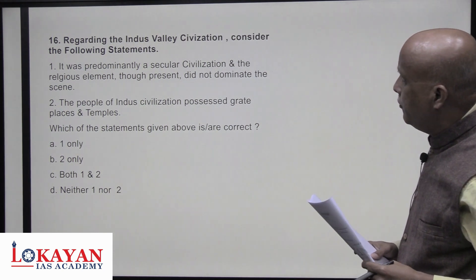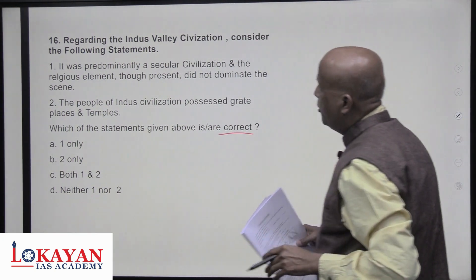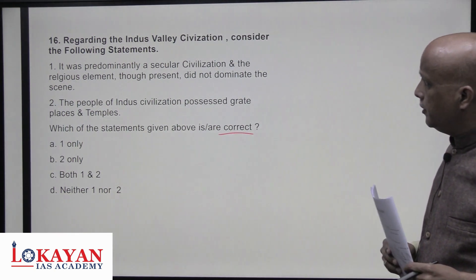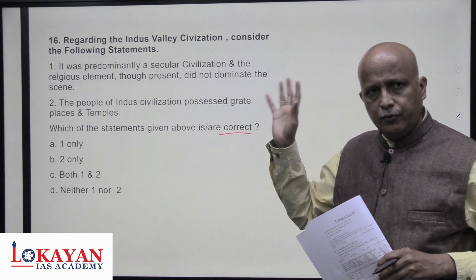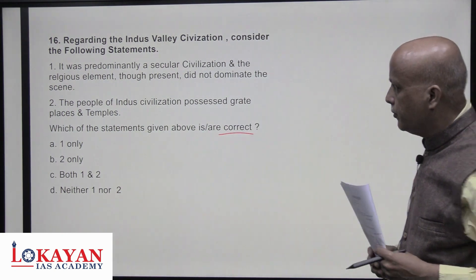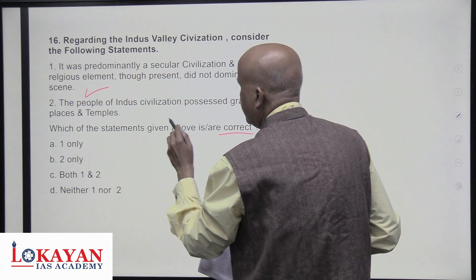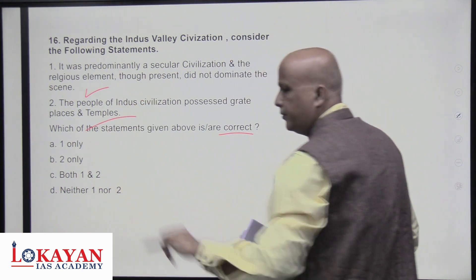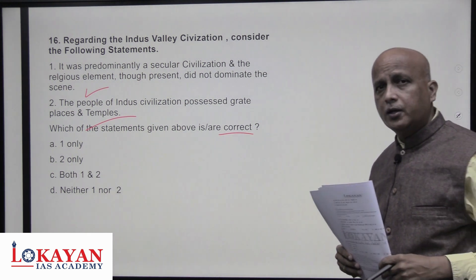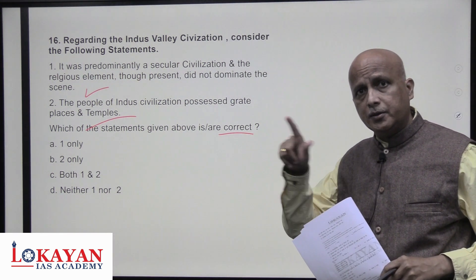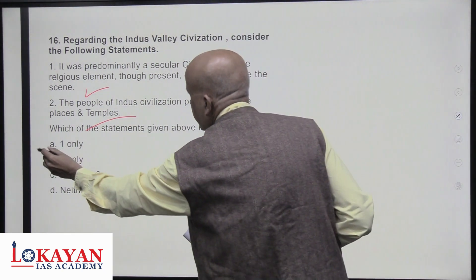Regarding IVC: it is predominantly a secular civilization where religious elements did not dominate the scene — correct; no temples or big worship structures are found. The statement that people of IVC possessed great palaces and temples is not true — palaces and temples of that scale are not found in IVC, unlike contemporary civilizations. Only statement one is correct — answer is one only.